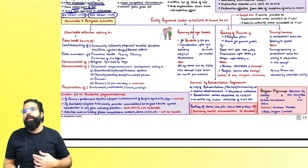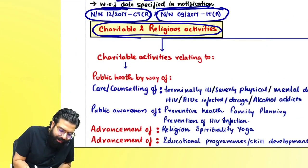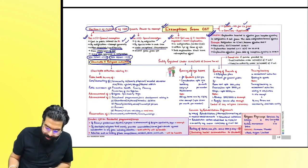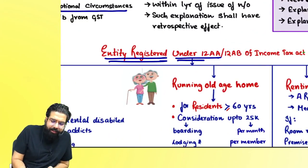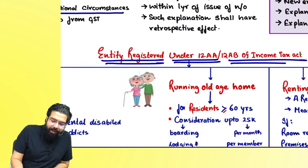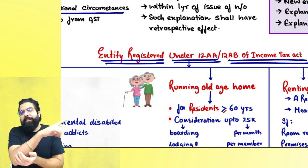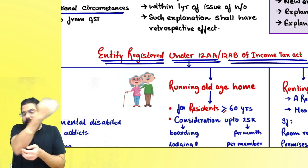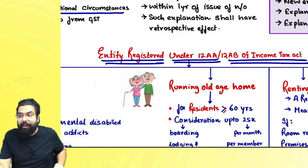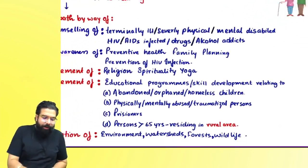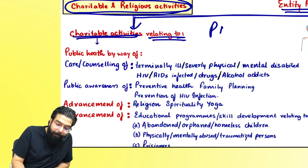The first exemption we are going to start with is charitable and religious activities — there is no amendment for your exam. An entity registered under Section 12AA or 12AB of the Income Tax Act doing charitable activity will not attract GST, but the activity must be one defined in the notification. The defined charitable activities relate to PAPE activities: P for Public health, A for Advancement of religion/spirituality/yoga, P for Preservation of environment/watershed/forest/wildlife, E for Educational programme and skill development.